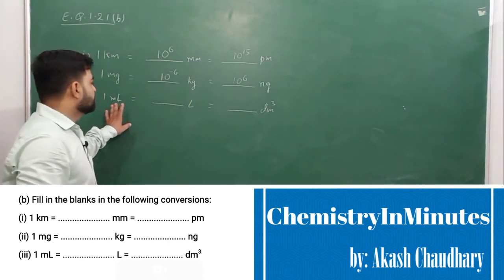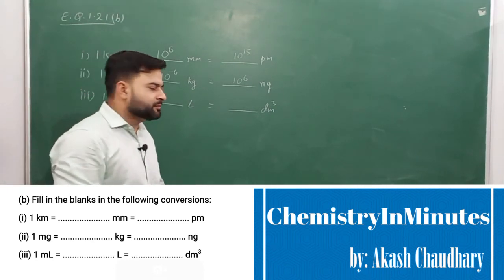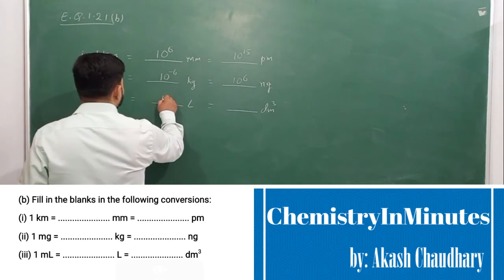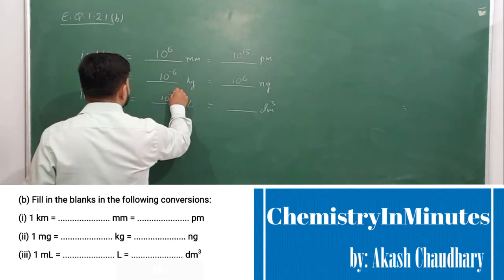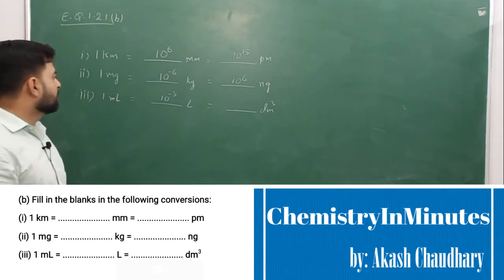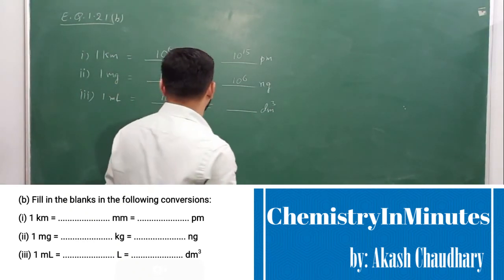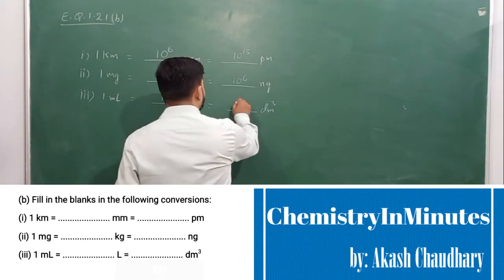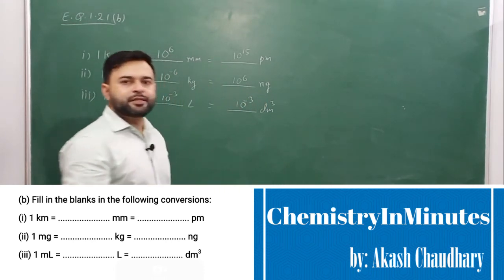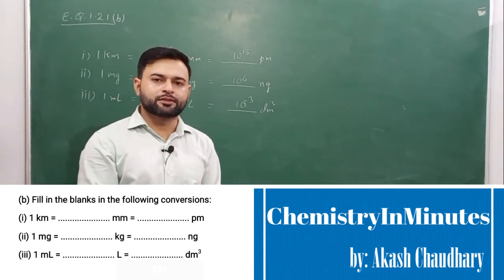1 mL: 1000 mL is equal to 1 liter, so 10 raised to the power minus 3 liters is equal to 1 mL. Also, 1 liter and 1 decimeter cubed are the same, so this will also come as 10 raised to the power minus 3. So this will be the answer to the question.